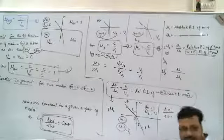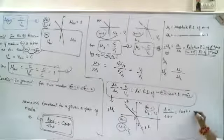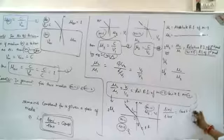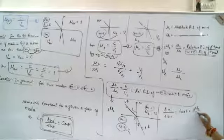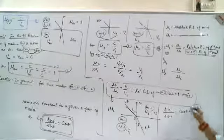Sine i upon sine r equals constant. And this was the constant value. This was the value of 1 mu 2, or mu2 upon mu1, which was the constant value of the ratio here.